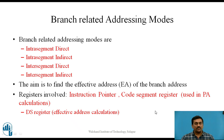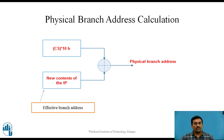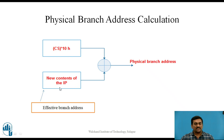We will also make use of the data segment register, which is used in effective address calculation. The physical branch address is calculated as the sum of the contents of the code segment register multiplied by 10 hexadecimal plus the new contents of the instruction pointer. The contents of the instruction pointer in this case are nothing but the effective branch address.